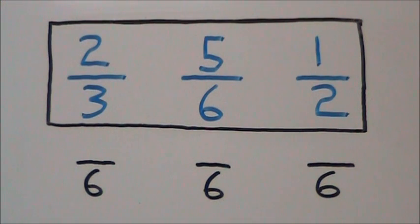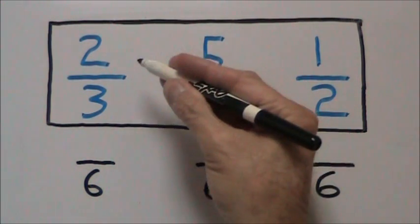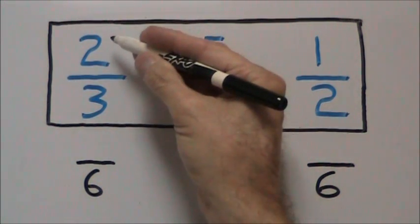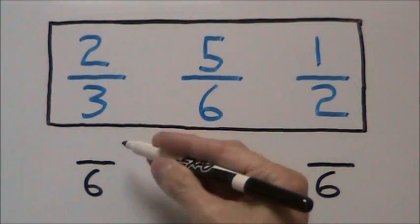Once we have our LCD, or least common denominator, we go to the first fraction, take our six divided by three to get two, multiply it by our numerator two to get four.